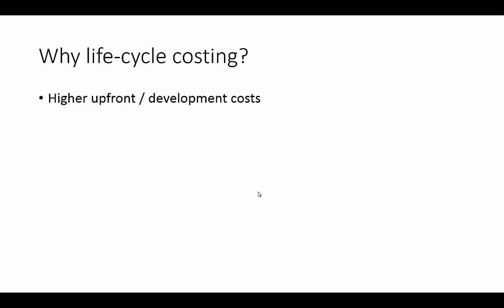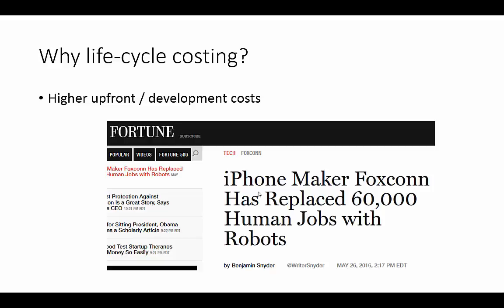Nowadays, upfront and development costs are a lot higher than in the past. For example, iPhone maker Foxconn have planned to replace 60,000 jobs with robots. With high upfront costs, it's important to look at all costs and revenues over a product's life cycle. Traditionally, there would have been high labour costs during the production phase. Using robots increases upfront production setup costs but reduces ongoing labour costs. The decision by Foxconn to use robots would have been made when considering the life cycle costs and revenues of the iPhone — not with a view to maximising short-term profits within a given financial year.